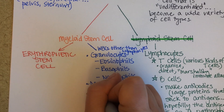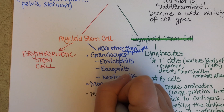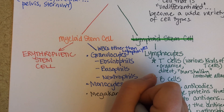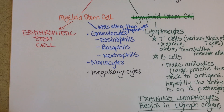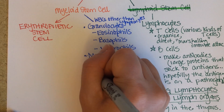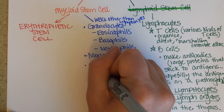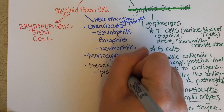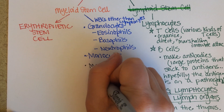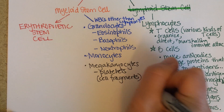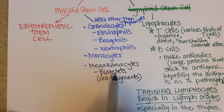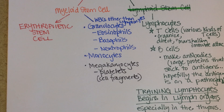Another cell type from this line is megakaryocytes. They come from the myeloid line but then become fragments — they're actually cell fragments — called platelets. They can go from being a smooth cell fragment to a sticky, spiky activated platelet that helps in clotting.